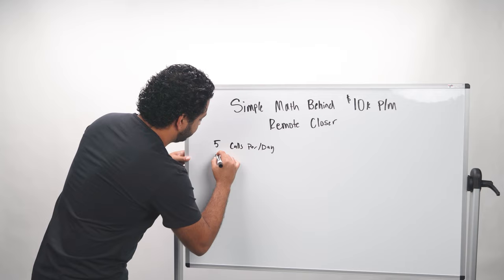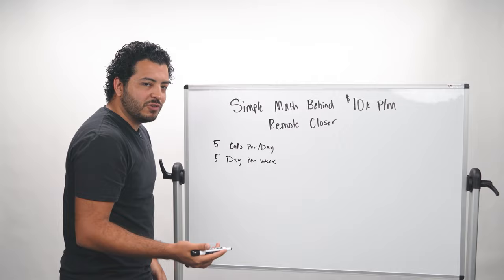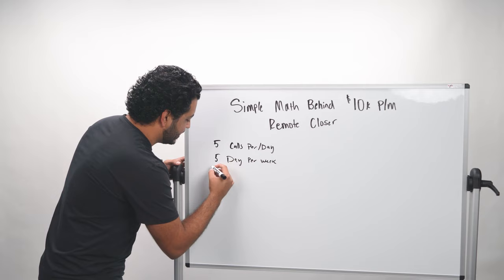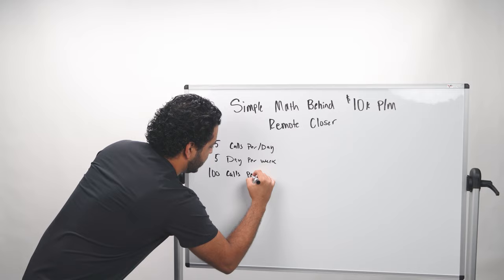You're going to start out with these numbers. But again, this is just how simple the math is. So let's just say you're doing five calls a day and you're doing that five days per week, right? Because you don't want to, I mean if you wanted to take sales calls over the weekend obviously you could, but this is just considering that you don't do that. So that comes out to about a hundred calls per month.